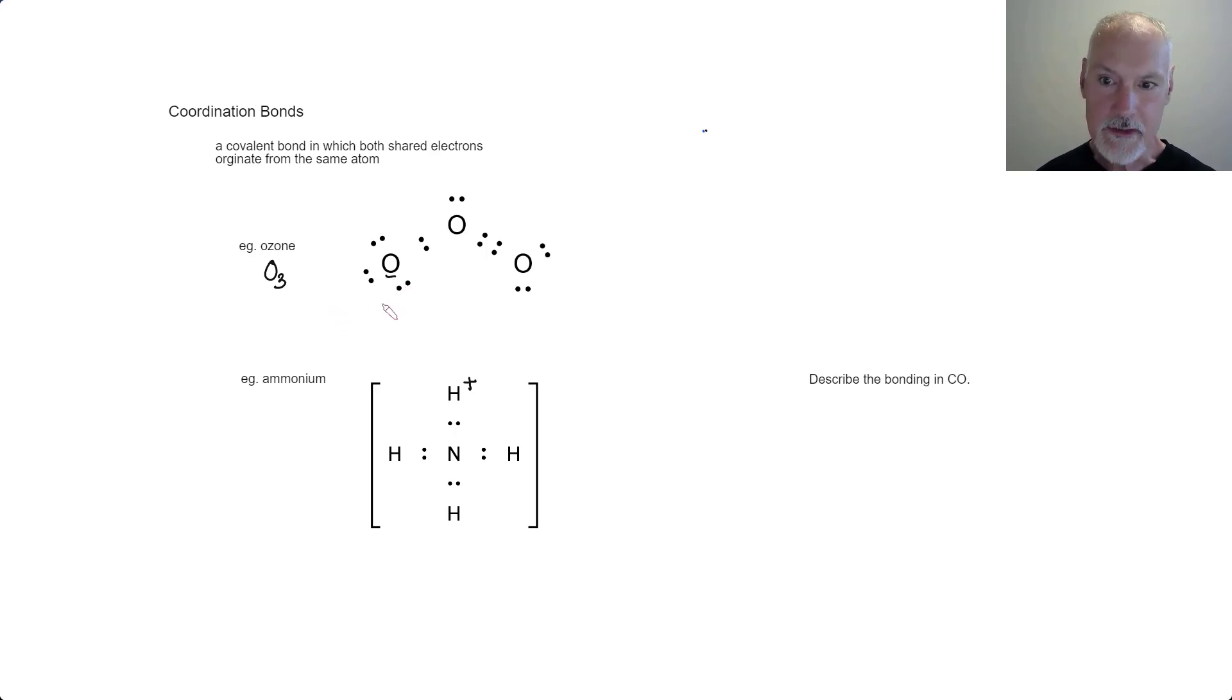What I want to do now is identify which electrons belong to which particular atoms. So I'm going to start at this oxygen. Oxygen has six valence electrons. So that's one, two, three, that's all of the electrons that would belong to this oxygen.